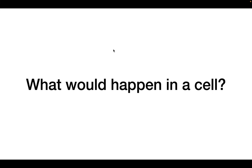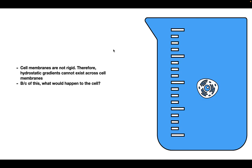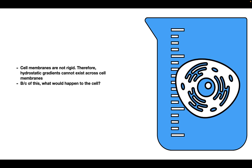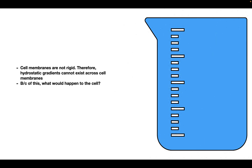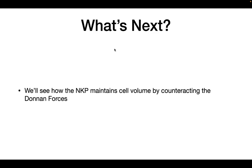What would happen if this were in a cell in the body? Unlike the rigid container, cells are not rigid — they are actually very malleable. Because of this, cells are not able to generate a hydrostatic gradient, meaning the difference between hydrostatic pressure inside and outside the cell is always zero. If Gibbs-Donnan equilibrium were allowed to take over, the cell would expand until it burst. Therefore, the cell must have a specific mechanism to counteract Donnan equilibrium, and this is achieved through the sodium-potassium pump, which we'll cover in the next video.